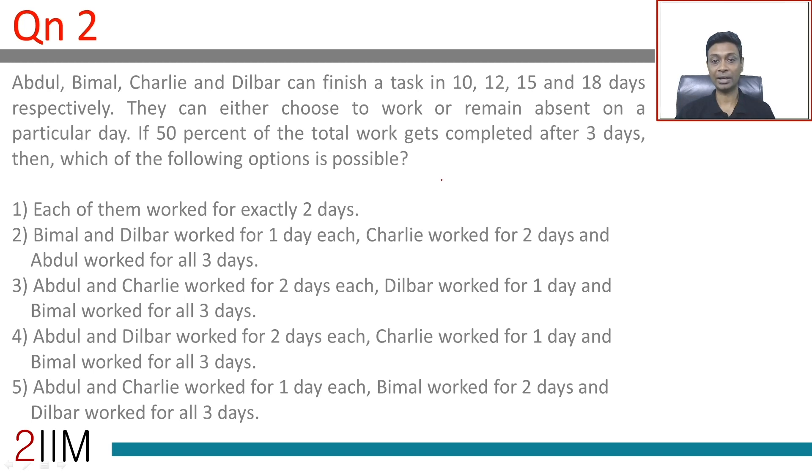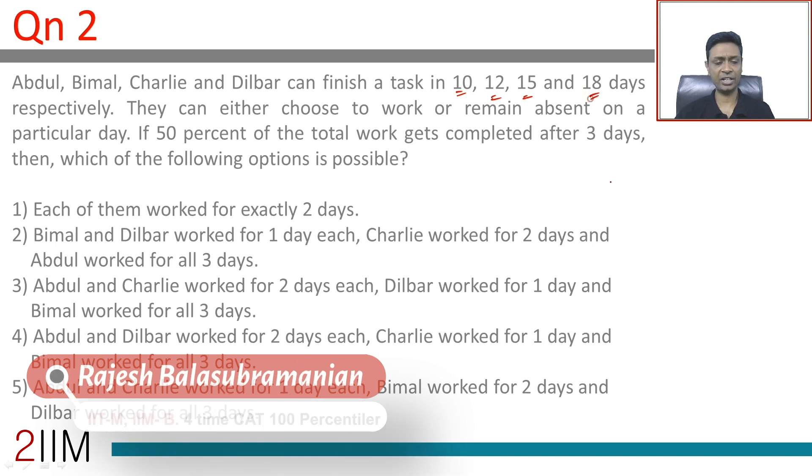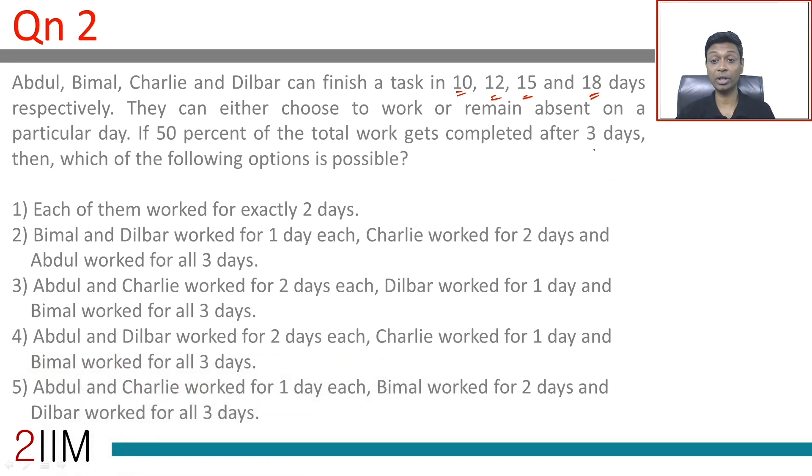Abdul, Bimal, Charlie and Dilbar can finish a task in 10, 12, 15 and 18 days respectively. They can either choose to work or remain absent on a particular day. If 50% of the total work gets completed at the end of 3 days, which of the following options is possible?